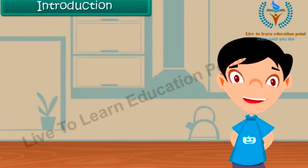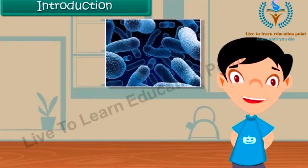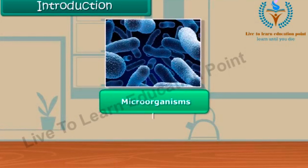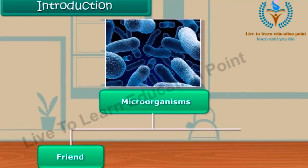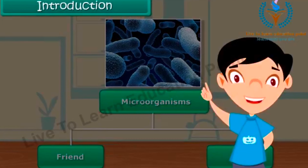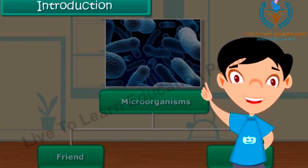Hi friends. As we all know, there are so many microorganisms in our surroundings. They are classified into different groups. Some of them are useful for us and hence called as friends, while most of them are harmful and hence called as foe or enemy. So in this module, we are going to learn more about the friends and foe nature of these microorganisms.